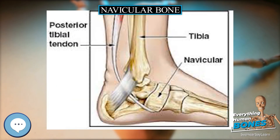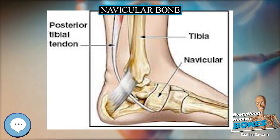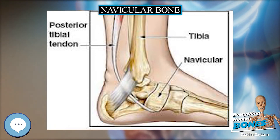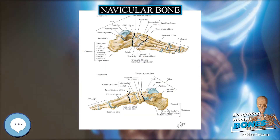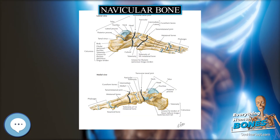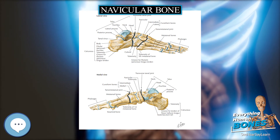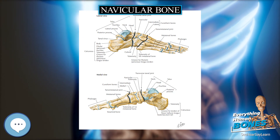The navicular region is an important structure in relation to lameness, particularly in the front feet, and is involved with a significant disease process called navicular disease or navicular syndrome.